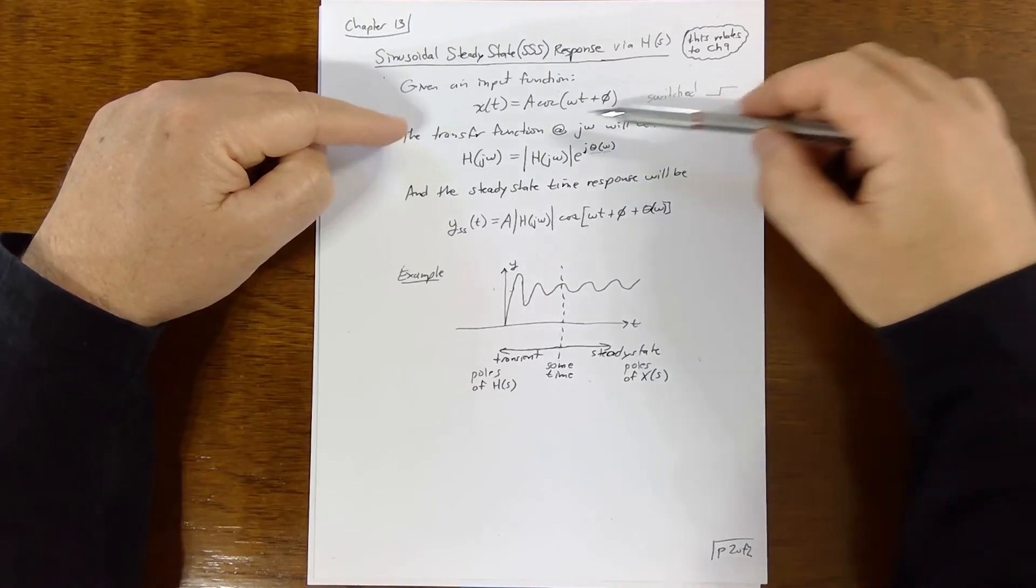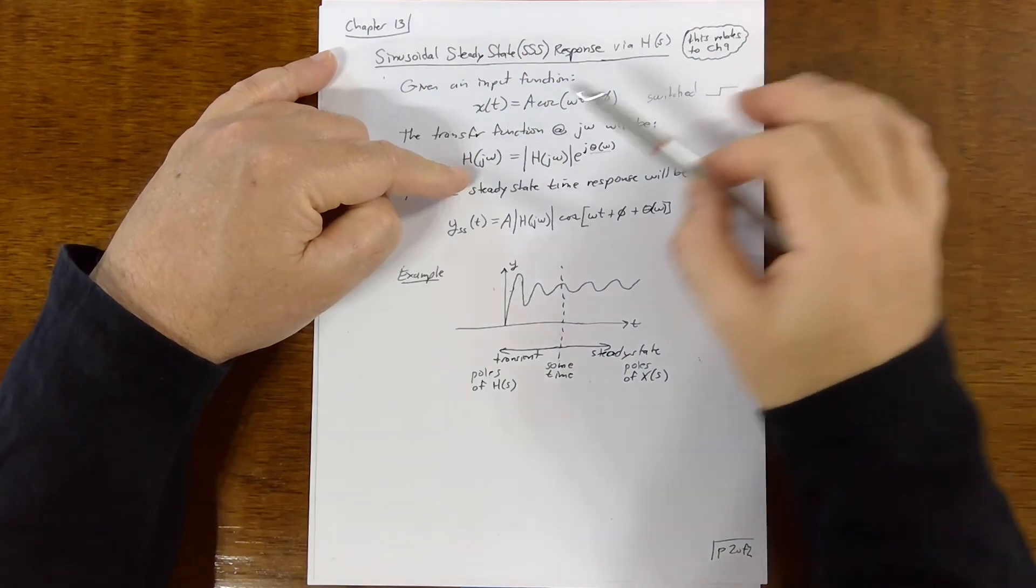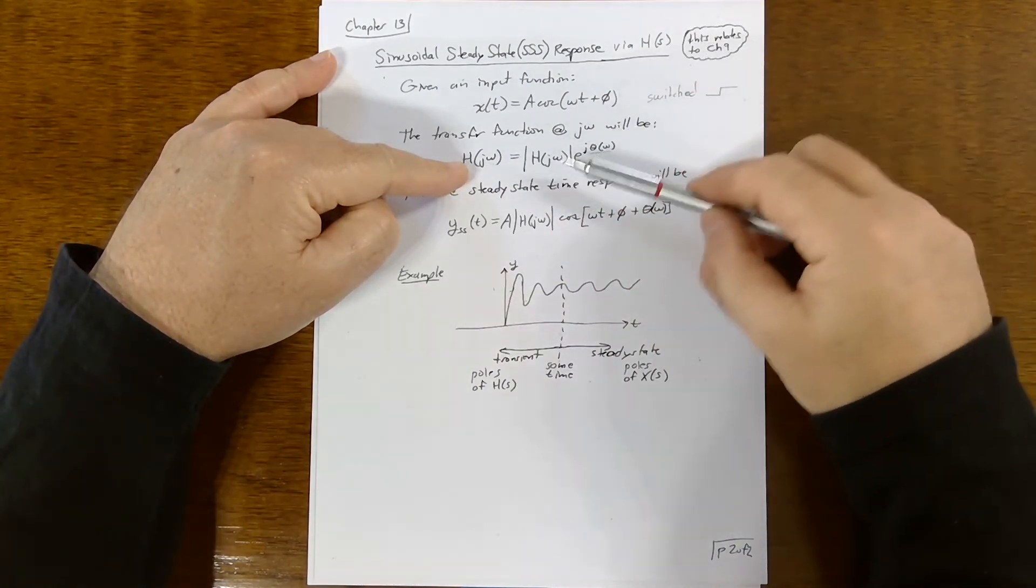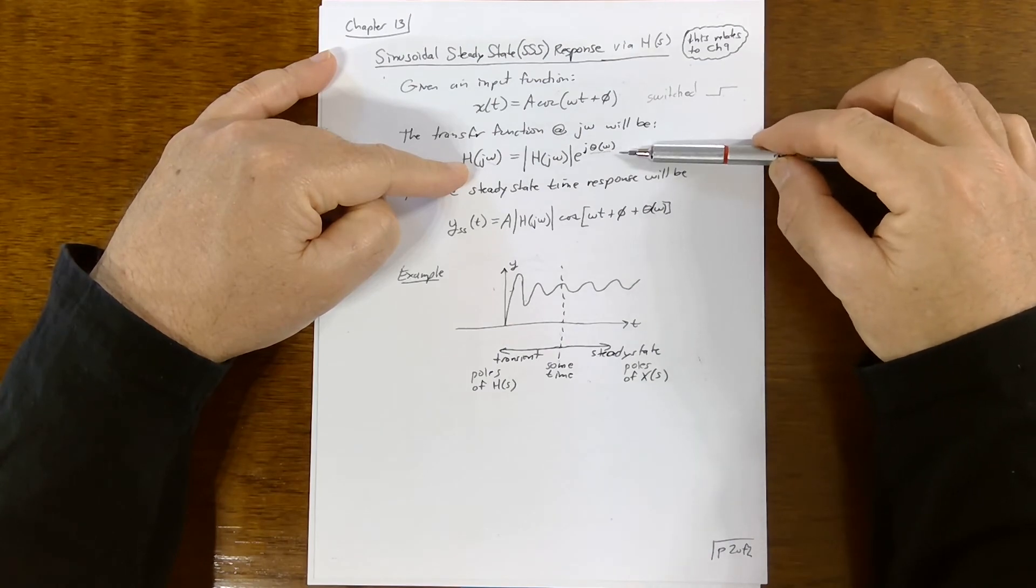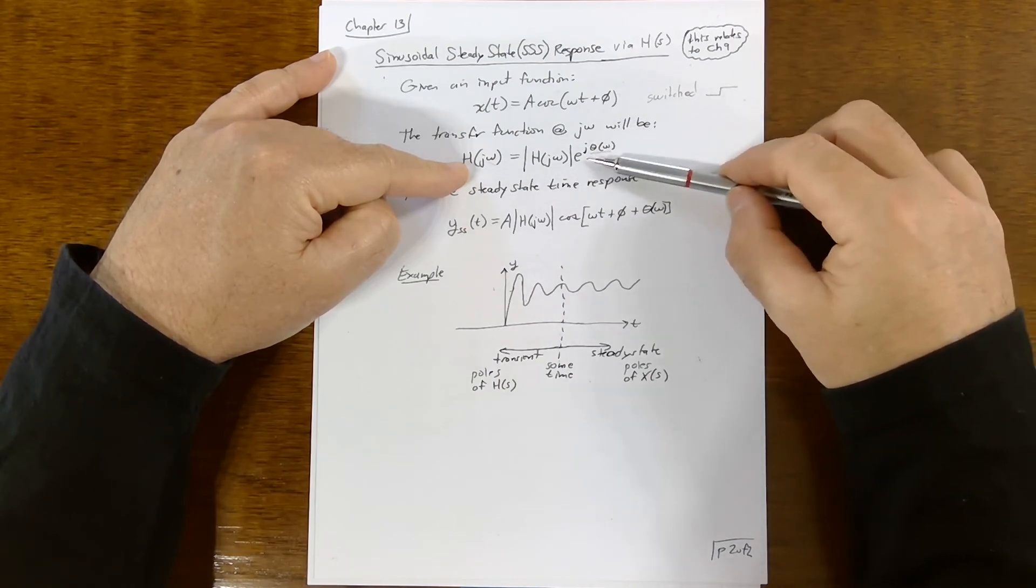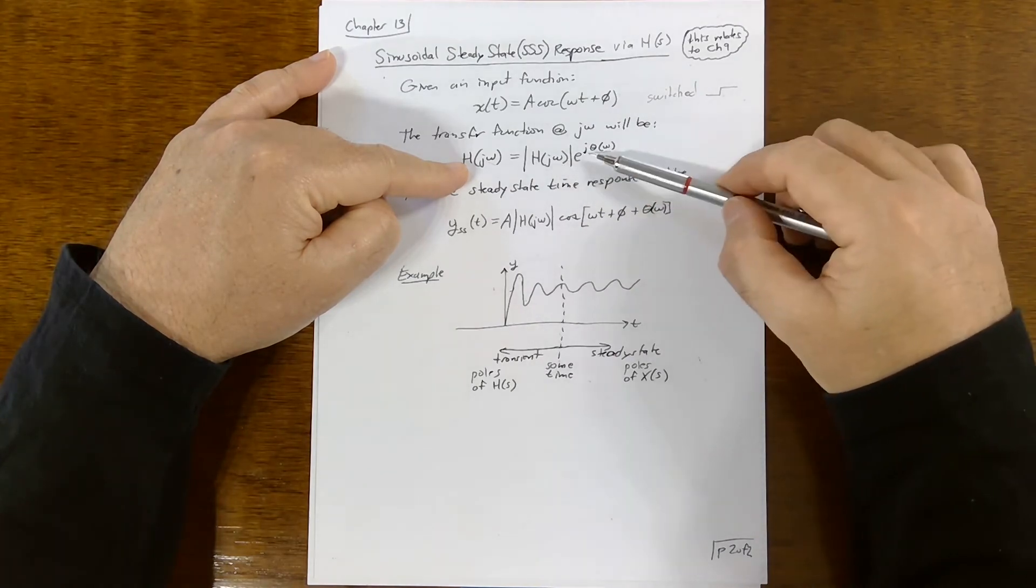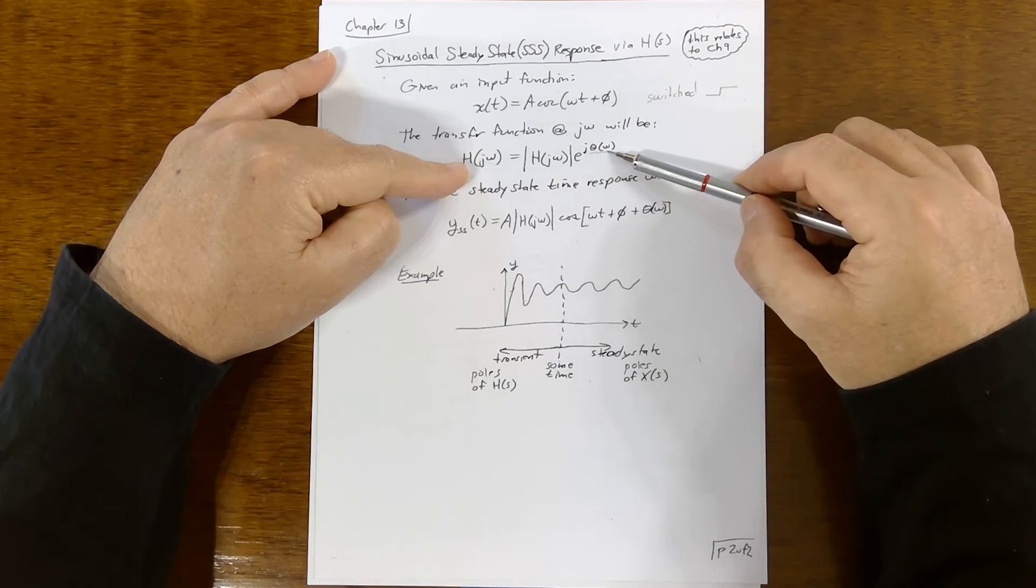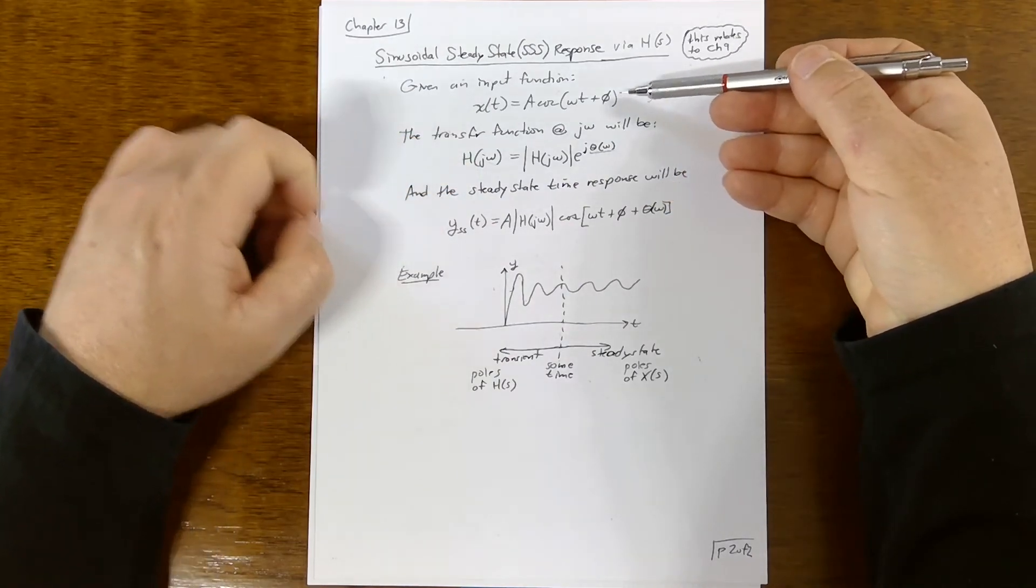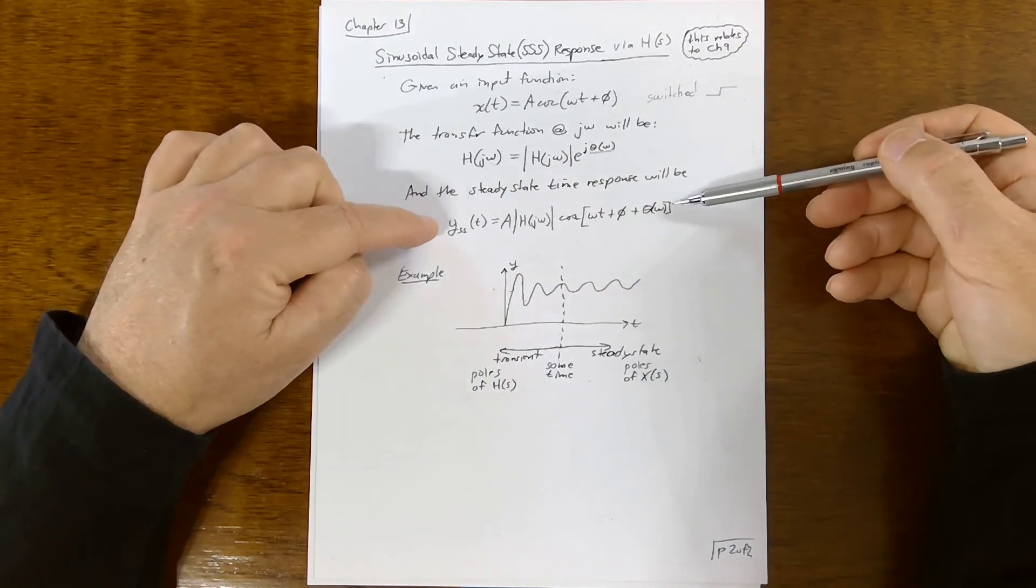Then it turns out, and we're skipping a whole bunch of math derivations, but it turns out that if you solve the transfer function H of S at J omega, just plug in J omega into whatever the transfer function turns out to be, some big ugly partial fraction is what it's going to be. But you plug that in and solve it at J omega, you'll get a constant. Well, this is just a phasor. It's just a magnitude and then a phase angle. In this chapter, they like to use this notation for a phasor. So it's a magnitude of H at J omega times E to the J theta of omega, and theta at omega, this little guy right here is a phase shift.